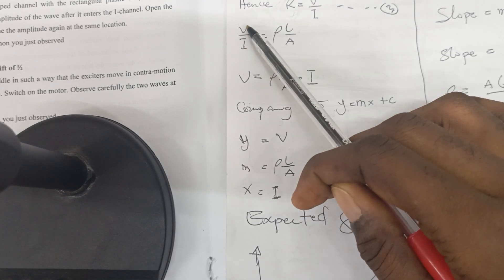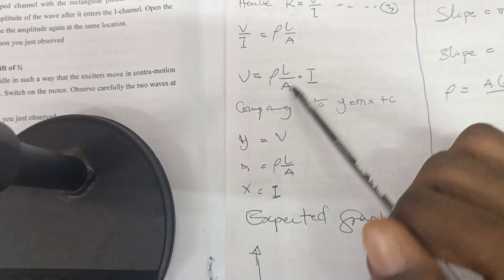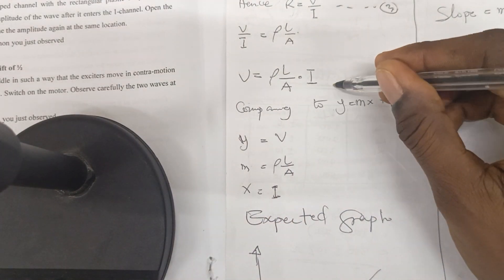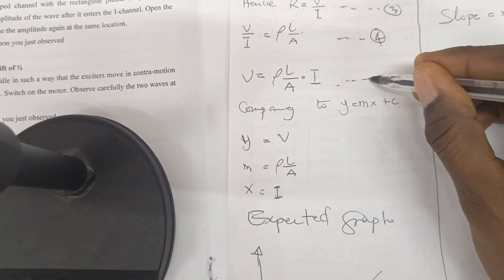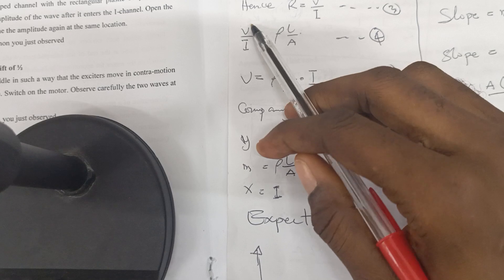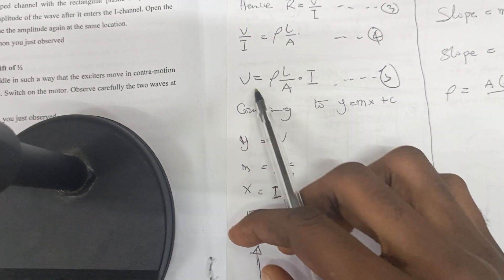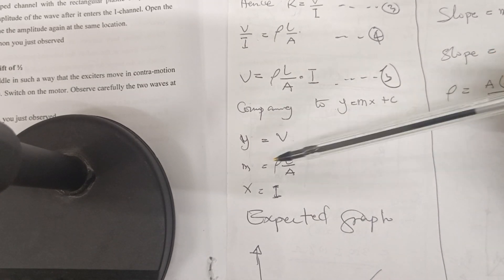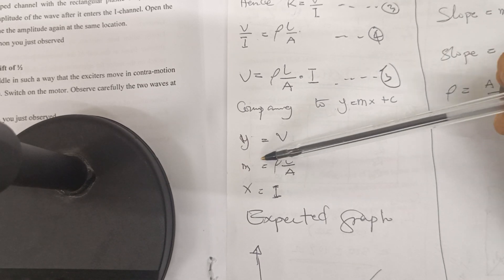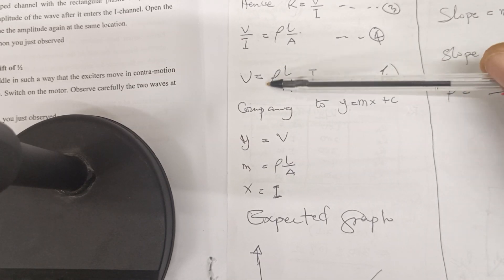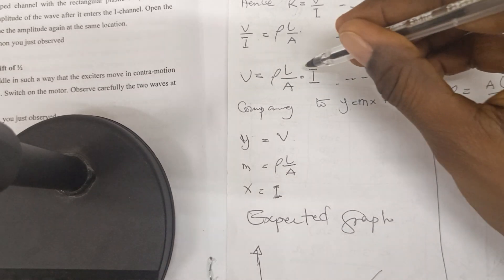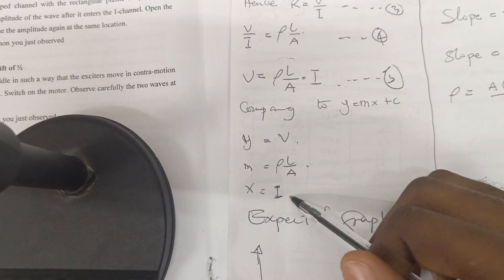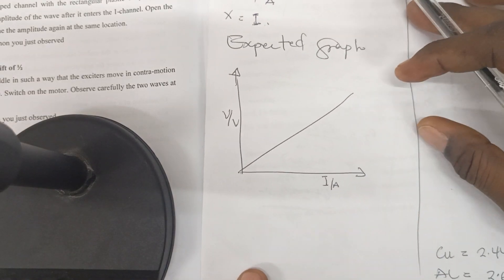Now we can plot voltage against current. To do so, we multiply through by I so that I cancels on one side and comes over to the other side. This gives us V = (ρL/A)·I. Comparing this to the straight-line equation y = mx + c, V is the y-component, current I is the x-component, and the slope equals ρL/A.